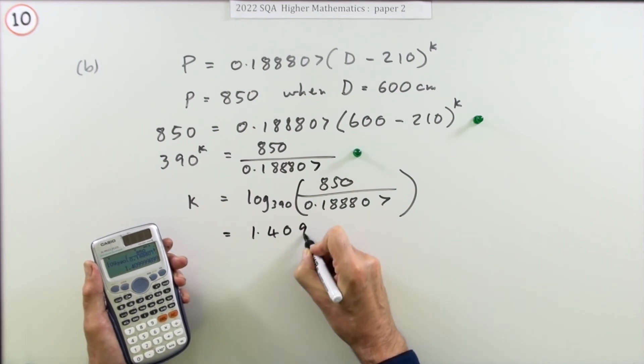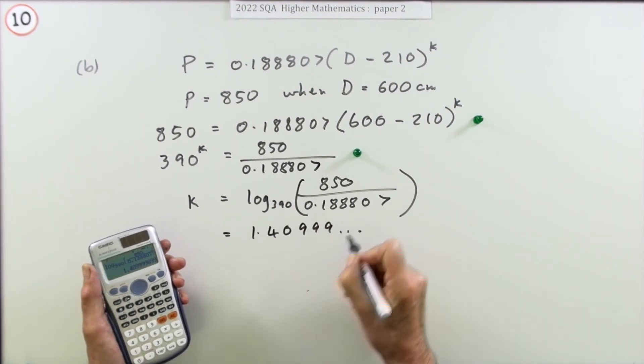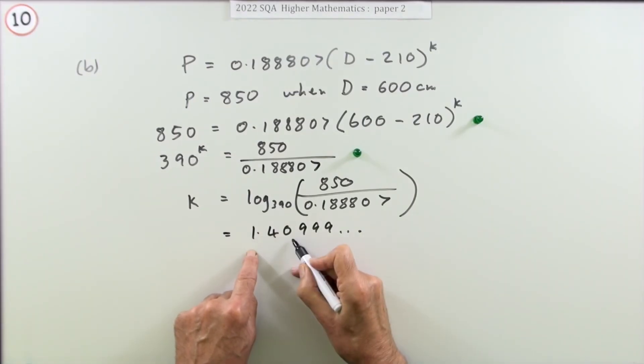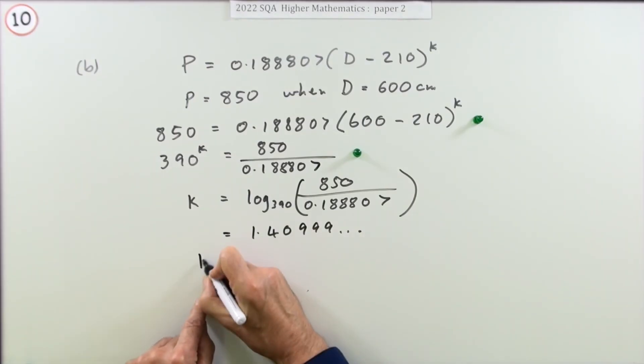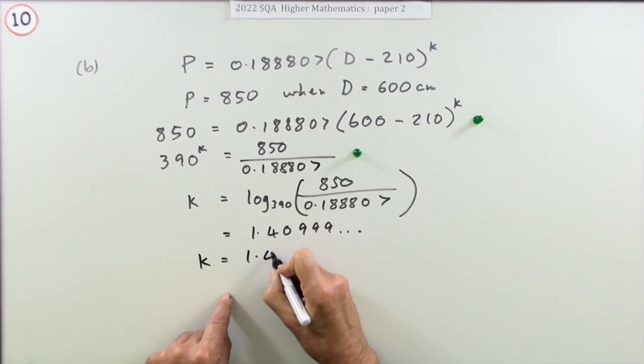Well, it was given to two decimal places in the first one, so that would seem reasonable to give it to two decimal places here: 1.41 for the last mark.